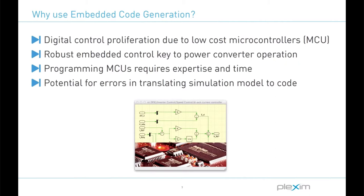Let's begin with the motivation behind using the coder. Digital control is widespread in the industry due to low-cost MCUs and the need to execute advanced flexible control strategies. However, utilizing embedded processors is not straightforward — it requires expertise in embedded systems and time for engineers to prototype and test embedded code. These processors have several low-level registers that the programmer must understand and configure, which can require reading thousands of pages of documentation to implement the desired peripheral configurations. Furthermore, there is not necessarily a one-to-one relation between the model and the MCU code, so there is a potential for translation errors between the simulation model and handwritten code.